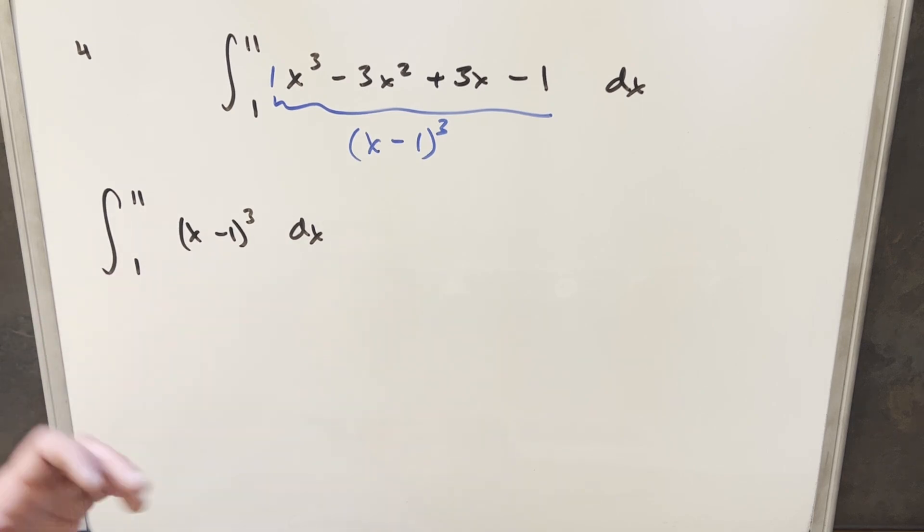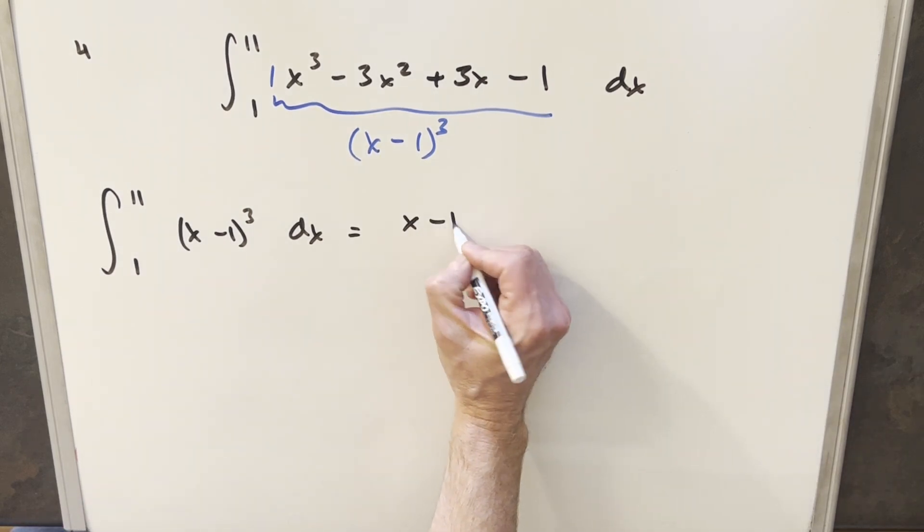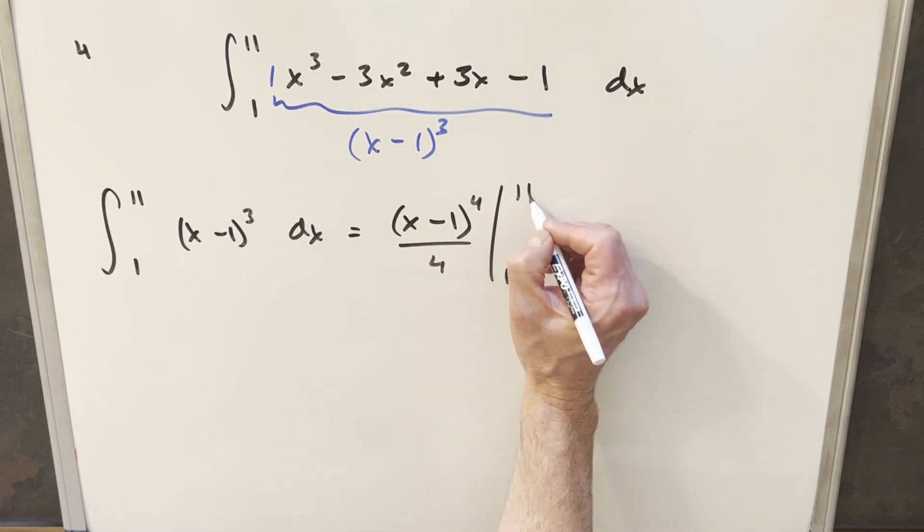The derivative of this is just going to be 1, so it's not really going to do anything. So let's just integrate this how it is using power rule. We'll go x minus 1 to the 4th over 4, and we just need to evaluate it from 1 to 11.